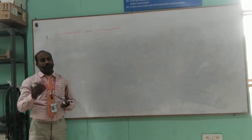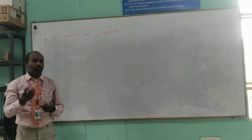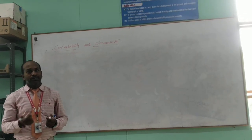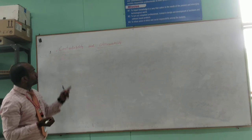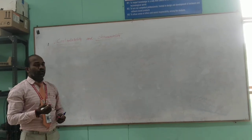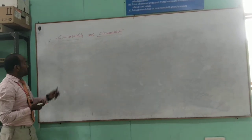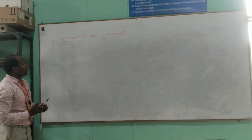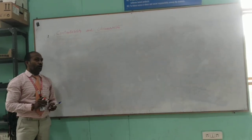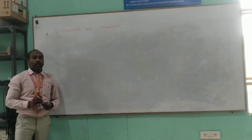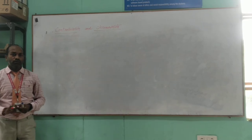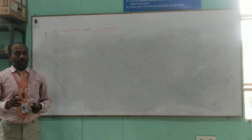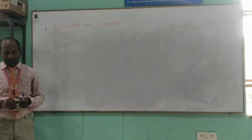Coming to observability, with the help of the measured output value, if it is possible to determine the initial state of a system, then the system is said to be observable. So these are the two important topics in control systems. There is a test called the Kalman test, and with the help of the Kalman test we will be able to verify whether the system is controllable or observable.